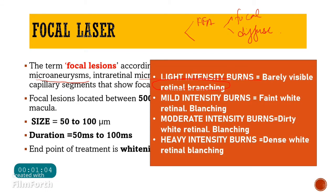Regarding burn intensities: a light intensity burn shows barely visible retinal blanching; mild intensity shows faint white retinal blanching; moderate intensity gives dirty white blanching; and heavy intensity gives dense white blanching. According to the ETDRS, we aim for moderate to heavy intensity burns, achieving dirty white to dense white retinal blanching.